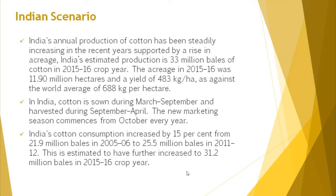Let us see the Indian scenario. India's annual cotton production acreage in 2015-16 was 11.90 million hectares, with a yield of 483 kg per hectare, as against the world average of 688 kg per hectare. In India, cotton is sown during March to September and harvested during September to April.